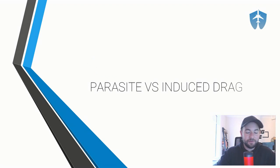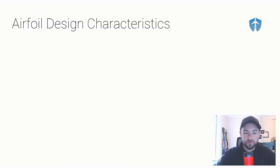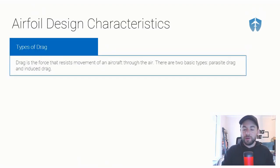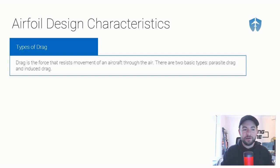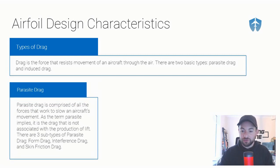Hello, students and instructors. My name is Nate with Wi-Fi CFI, here to talk to you today about parasite and induced drag and the differences between the two. If you don't know what drag is, remember there are four forces of flight: lift, weight, thrust, and drag, and they oppose each other. In this quick tip video, we're going to be talking about drag — the force that resists the movement of an aircraft through the air. There are two different types, and we're going to go over the differences between them.